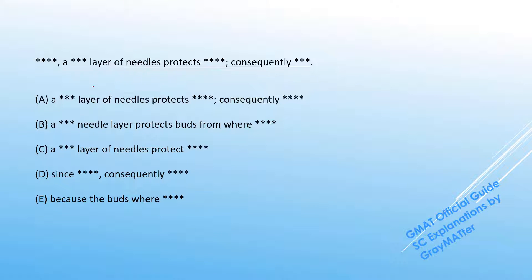This is a fairly easy question to deal with. The sentence reads that a layer of needles protects these birds, and we have a semicolon here followed by consequently something else happens.